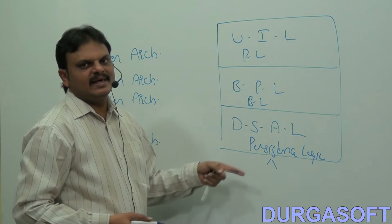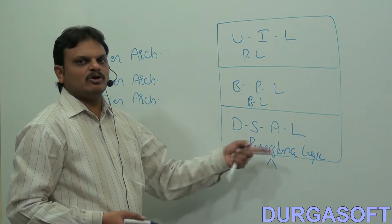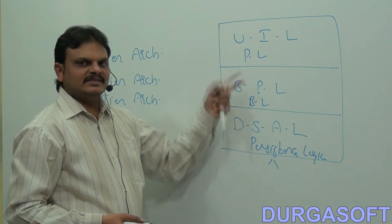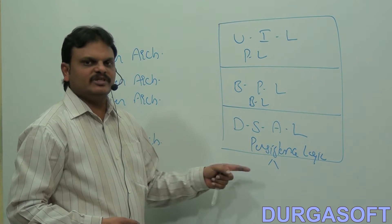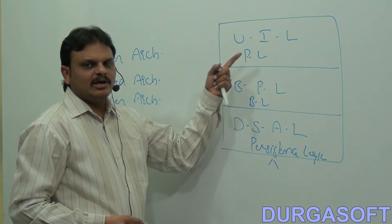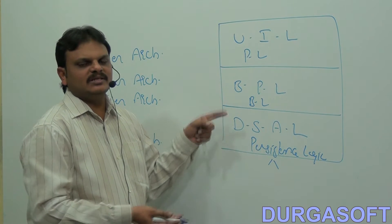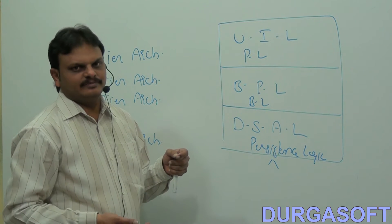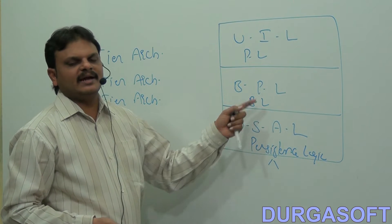Providing all three layers within a single machine means the single machine's resources may not be sufficient. The system may get burdened by having all these many layers within a single machine. At the same time, providing all three layers within a single machine automatically makes this type of design a tightly coupled design — it will not provide loosely coupled design.